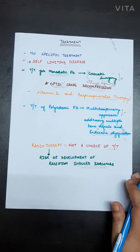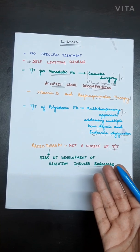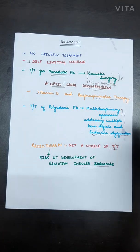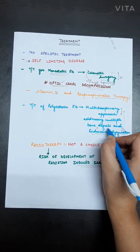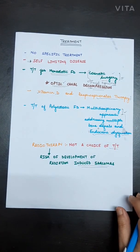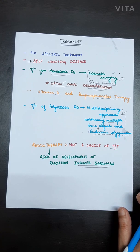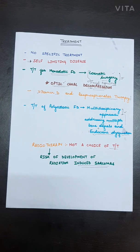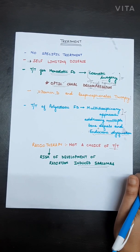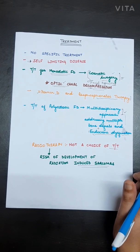For polyostotic fibrous dysplasia, a multidisciplinary approach is required since multiple bones are involved. All bone defects as well as endocrine dysfunctions must be treated. Radiotherapy is not a treatment of choice in fibrous dysplasia, as it carries a high risk of developing radiation-induced sarcomas such as osteosarcoma, chondrosarcoma, fibrosarcoma, and other malignant forms.